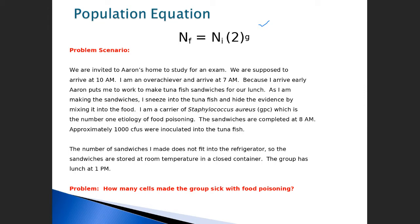Since nobody's around, I simply hide the evidence by mixing whatever came out of my sneeze into the food. I'm a known carrier of Staphylococcus aureus, which is a gram-positive coccus and the number one etiology — meaning cause — of food poisoning. I make the sandwiches, and my task is completed by 8 o'clock in the morning. There were approximately 1,000 CFUs inoculated into that tuna fish. The sandwiches don't fit in the refrigerator, so they're stored at room temperature. Everybody comes over and has lunch at about 1 p.m.